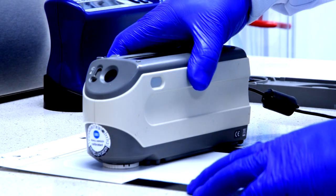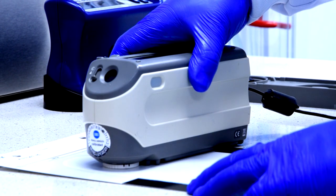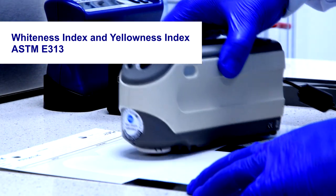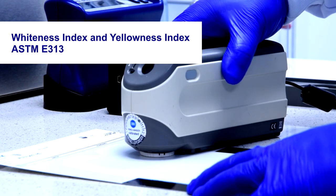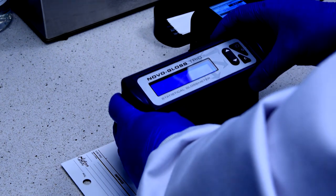After drying we measure the color with a spectrophotometer. In this case we have white paint so we measure the whiteness and the yellowness index in relation to the standard paint. And gloss with a spectrophotometer.